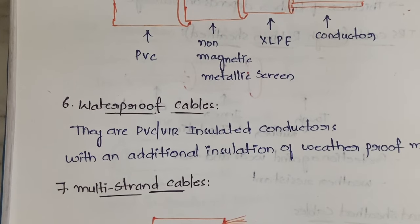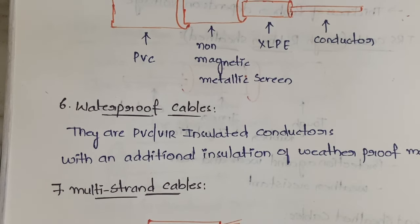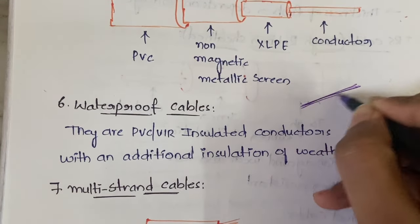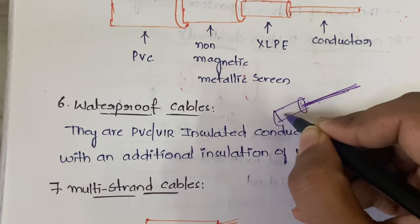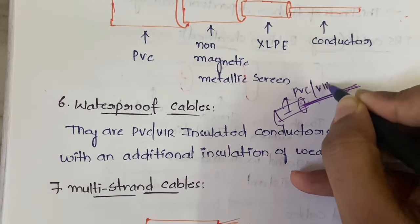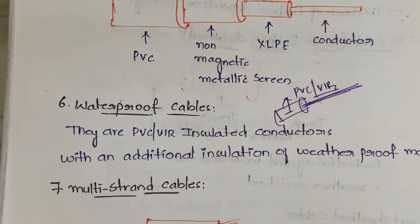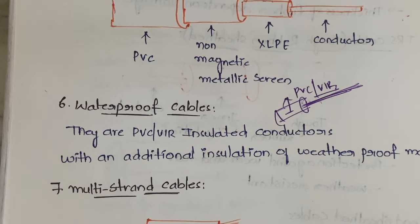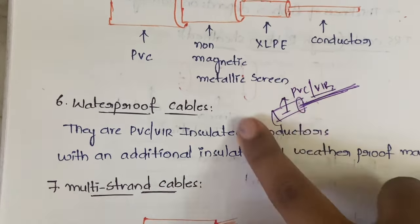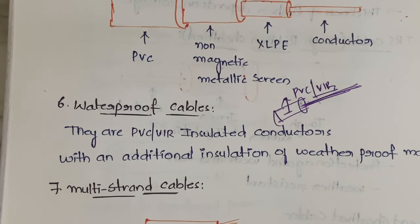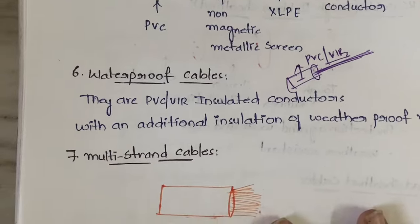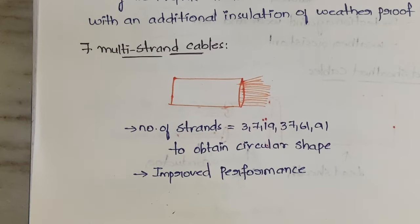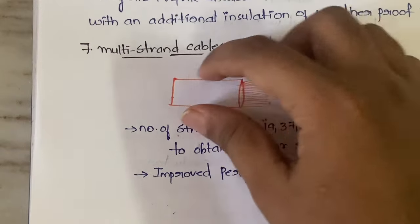The sixth type is the waterproof cable. You will have a conductor, and around that conductor a material of PVC or VIR insulation. Around this insulation you will have a weatherproof material — the choice of weatherproof material depends on the climatic conditions of the area. So: conductor surrounded by PVC or VIR, then a weatherproof outer layer.